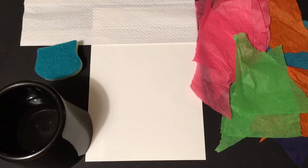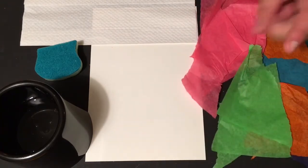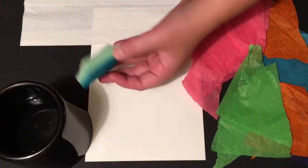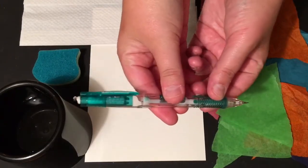So the materials you are going to use are a bunch of different colors of tissue paper just ripped up into pieces, watercolor paper, a paper towel, a little sponge, and of course some water and a pencil to write your name.